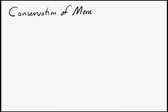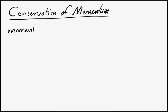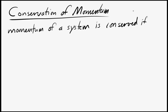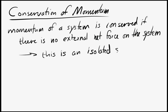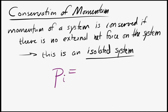Conservation of momentum: the momentum of a system is conserved as long as there is no external net force acting on any part of the system. We call this kind of system an isolated system. In isolated systems, the momentum of the system is conserved. We can write this as the total momentum of the system at the beginning, pi, is equal to the total momentum of the system at the end, pf.